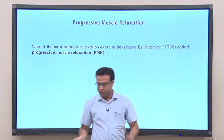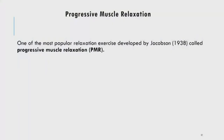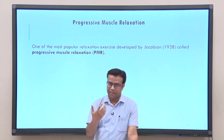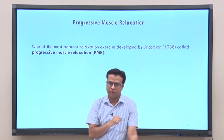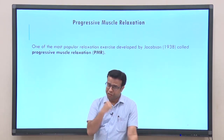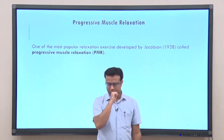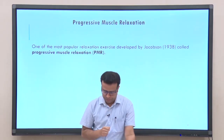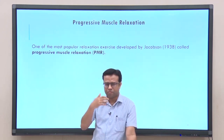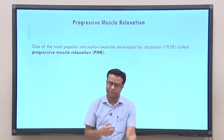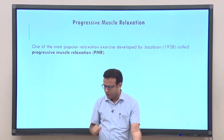Now we will talk about another relaxation exercise called progressive muscle relaxation, also known as PMR. This is one of the most popular and effective ways of achieving deep relaxation, and it was developed by Jacobson in 1938. It was developed many decades ago but is still very popular because of its effectiveness.